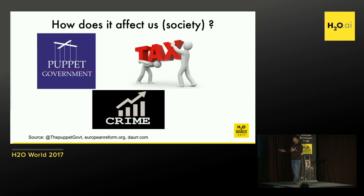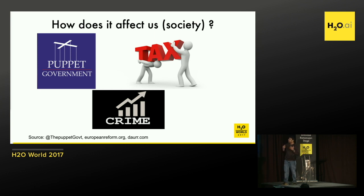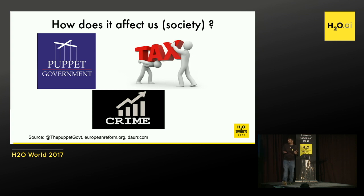We've seen how money comes into the system and what the different sources of illegal money are. Now, how does it actually affect us? What actually happens in the system?